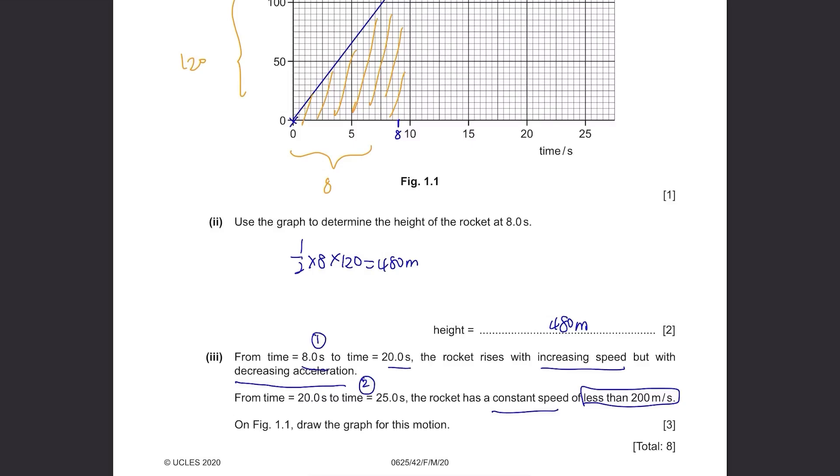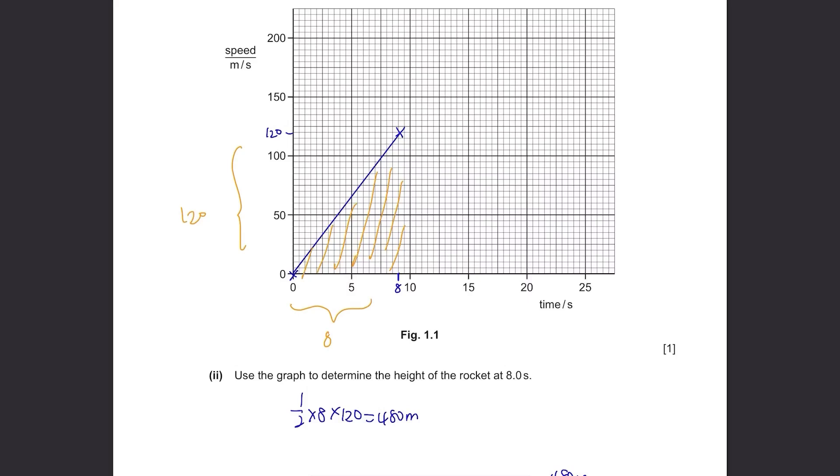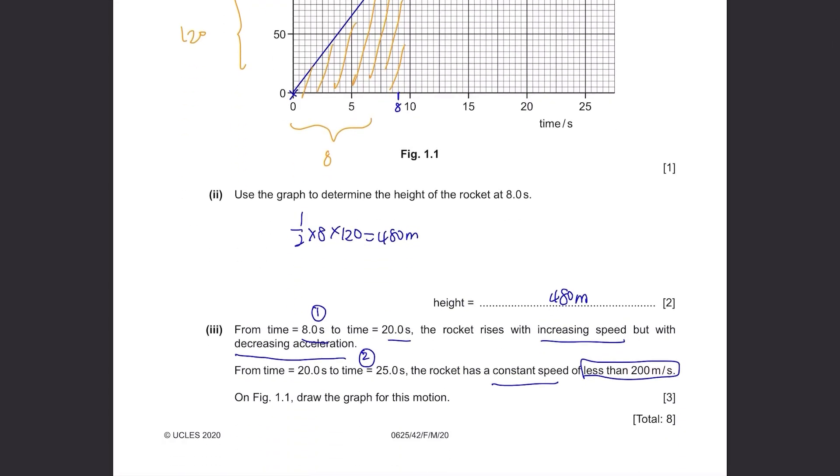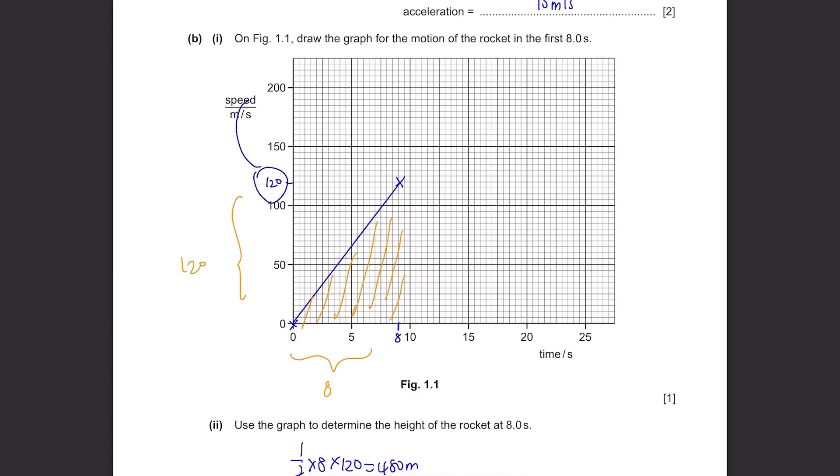From 8 seconds to 20 seconds, they didn't specify any figures for the speed, so we don't have to plot an accurate graph for that. But we just have to show that the speed is increasing from 120, it will reach somewhere between 120 and 200. Then with decreasing acceleration, this means that the gradient is decreasing because the gradient stands for the acceleration. So to draw this, it's going to be a curve with a decreasing gradient. In case you're wondering what's the increasing gradient and what's the decreasing gradient, this is the increasing gradient, and this is the decreasing gradient.